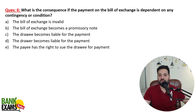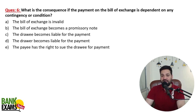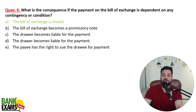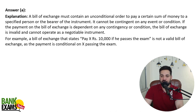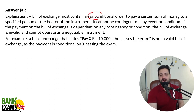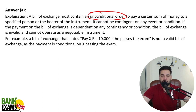What is the consequence if payment on a bill of exchange is dependent on any contingency or condition? The bill of exchange is invalid, because a bill of exchange should be unconditional. According to the first line of the definition of a bill of exchange under the Negotiable Instruments Act, it should be an unconditional order and must not be based upon any condition.